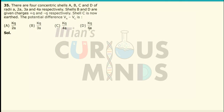There are 4 concentric shells A, B, C, and D of radii A, 2A, 3A, and 4A. Shells B and D are given charges of +Q and -Q respectively. Shell C is now earthed. We need to find the potential difference VA minus VC.